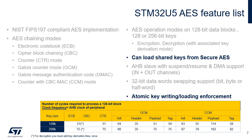The AES Accelerator supports three operation modes: encryption, decryption, and key derivation for decryption. It processes 128-bit data blocks using an encryption key that is either 128 or 256 bits long, based on the selected chaining mode.